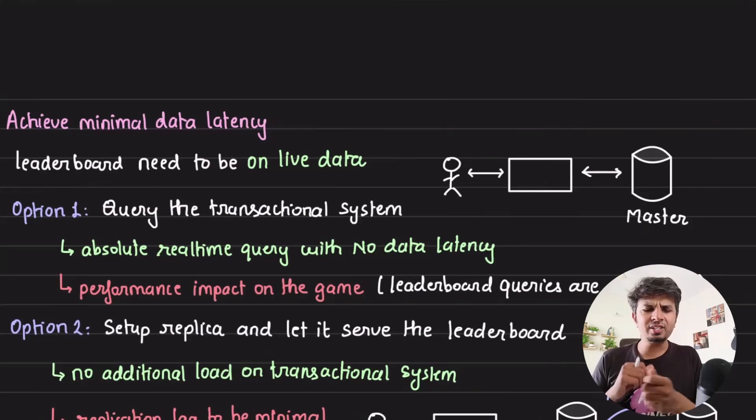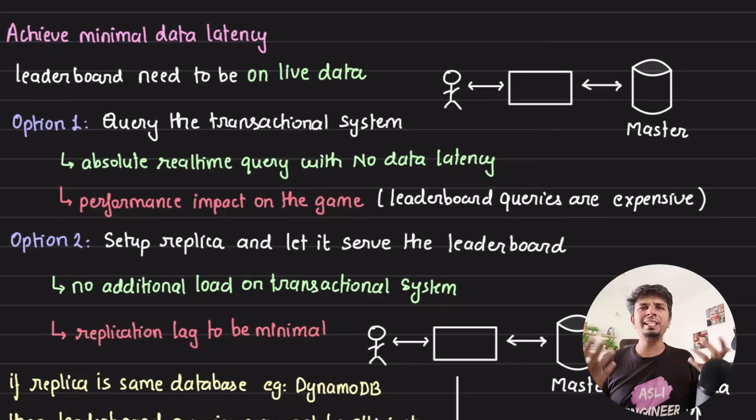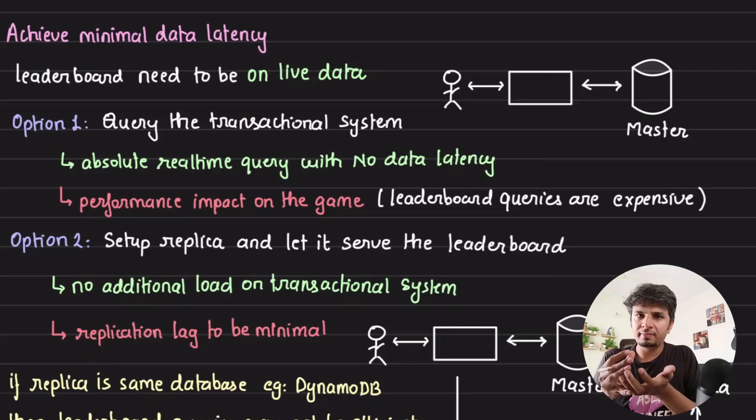The most important requirement is we need minimal data latency, which means leaderboard needs to be built on top of live data. You may think, hey, easy, right? I'll have one database, my transactional system, where I'm ingesting data and I'm querying on it. Let's say that is MySQL. You ingest the data and you query the data from the same node. It's absolute real time because that is your source of truth.